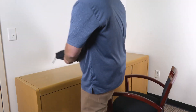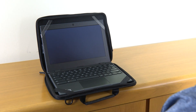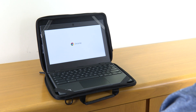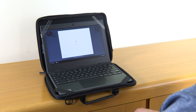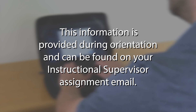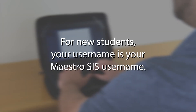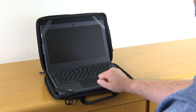You are supplied with a Chromebook by Quaker Digital Academy. It will come preloaded with the software needed for your Quaker Digital Academy coursework. The Chromebook should turn on when opened. If not, open the Chromebook and press the power button located in the top right corner. After powering on, the Chromebook will boot up to the login screen. Enter your QDA username and password. This information is provided during orientation and can be found on your instructional supervisor assignment email. For new students, your username is your Maestro SIS username. When finished with your session, log out of your Chromebook by clicking in the bottom right corner and selecting Sign Out.